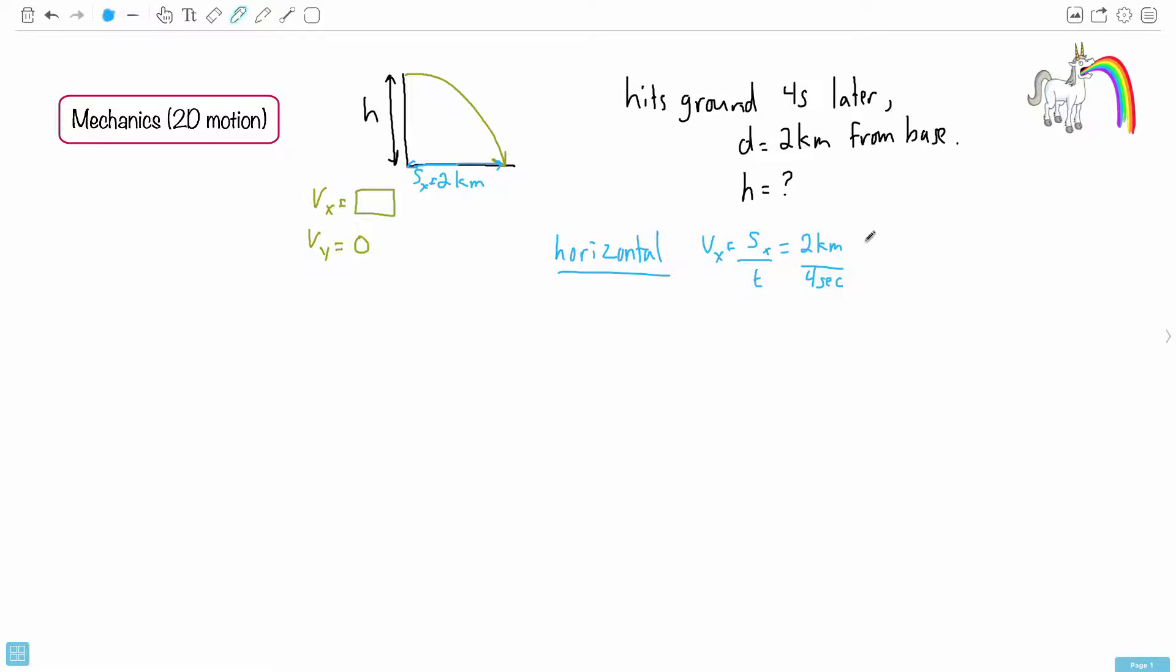However, we actually don't need this. By the way, the reason why we just use VX is SX over T, that's because it's not accelerated. Now this thing actually isn't accelerating. In the vertical direction, however, it is accelerating. So that's what's important here. It is accelerating. So because of that, we need to use our accelerated motion equations.